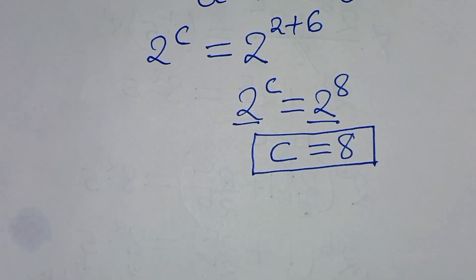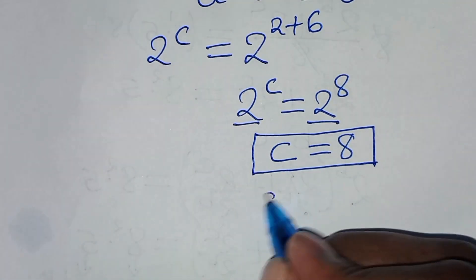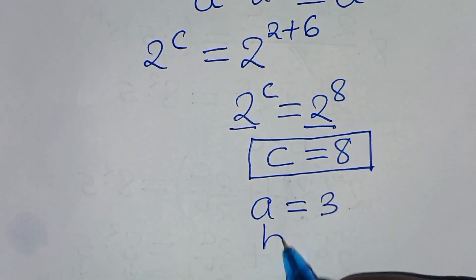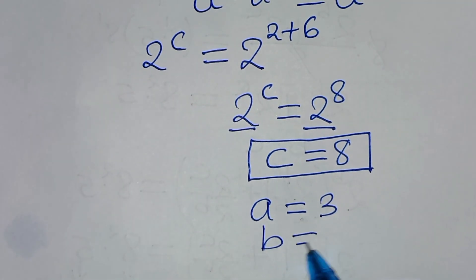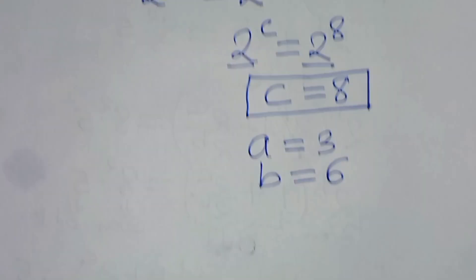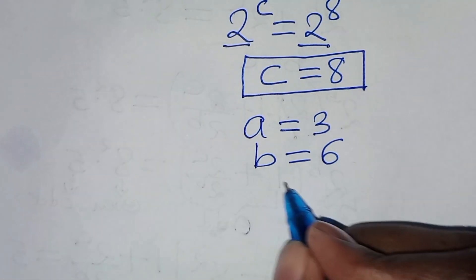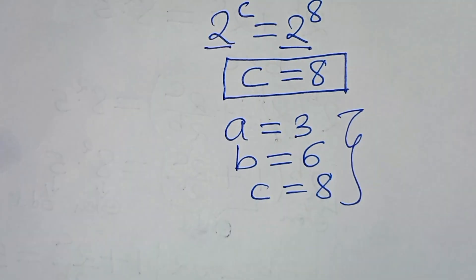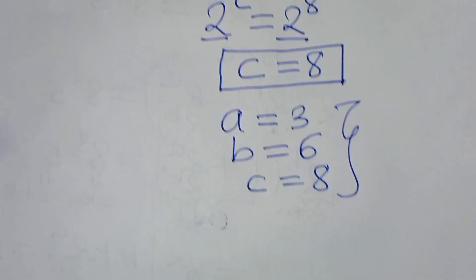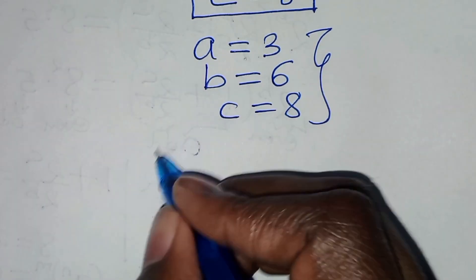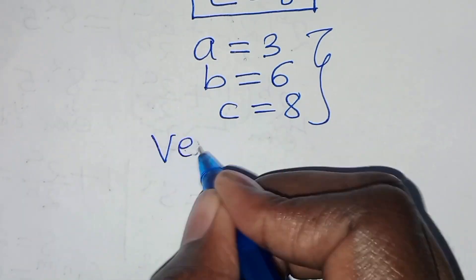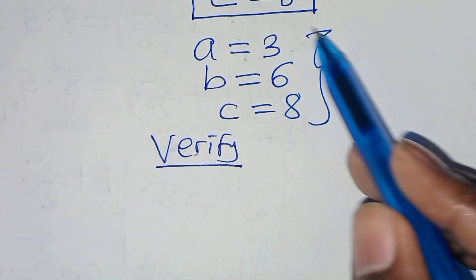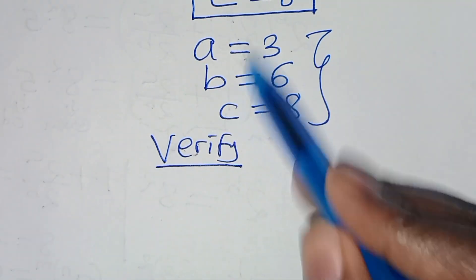So the values are: a = 3, b = 6, and c = 8. The next step is to verify that a, b, and c satisfy the original equation.